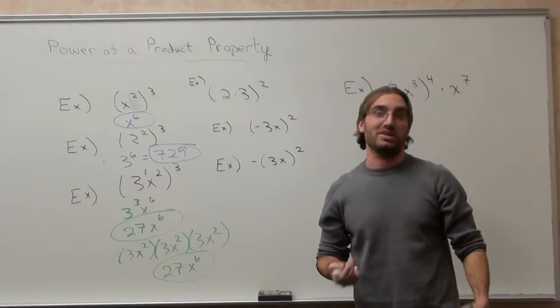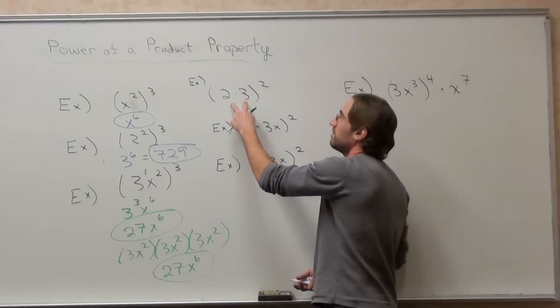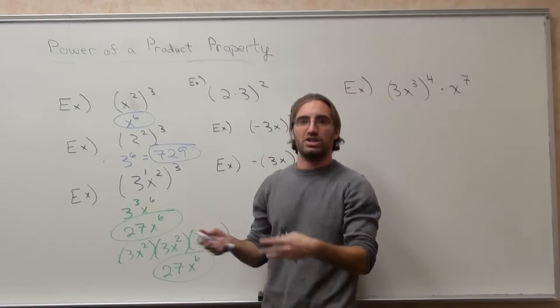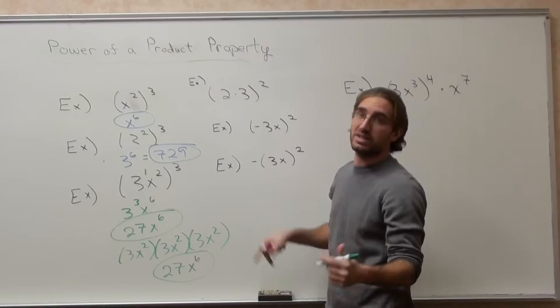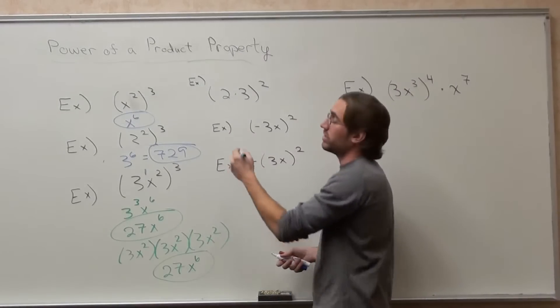Here's the other way you can do it. I don't necessarily recommend it, but you can combine these. You can't combine 3x squared, it's just 3x squared. But 2 times 3, you can make 6.